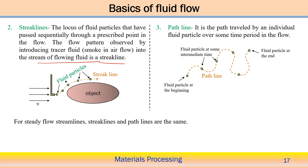Similarly, path lines also exist. A path line is the path travelled by an individual fluid particle over a period of time within the flow. For example, tracking the fluid particle at the very beginning, at some intermediate time, and so on — completely tracking the position of the fluid particle — represents the path line. In general, for steady state flow, streamlines, streak lines, and path lines are basically the same.